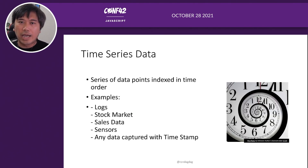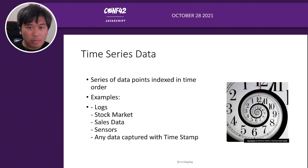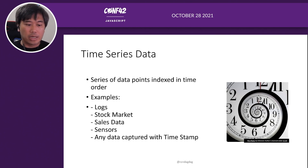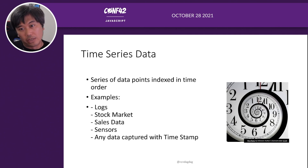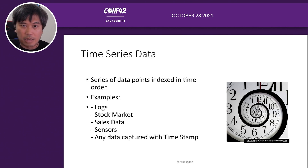Let's talk about time series data. Time series data is a series of data points indexed in time order. Good examples include logs, stock market data, sales data, or sensor data. What we're talking about is any data captured with a timestamp — you have your timestamp and then the value, and you can have multiple values as long as they're indexed against time. This is very common because if you look at log files, they're all time series based.